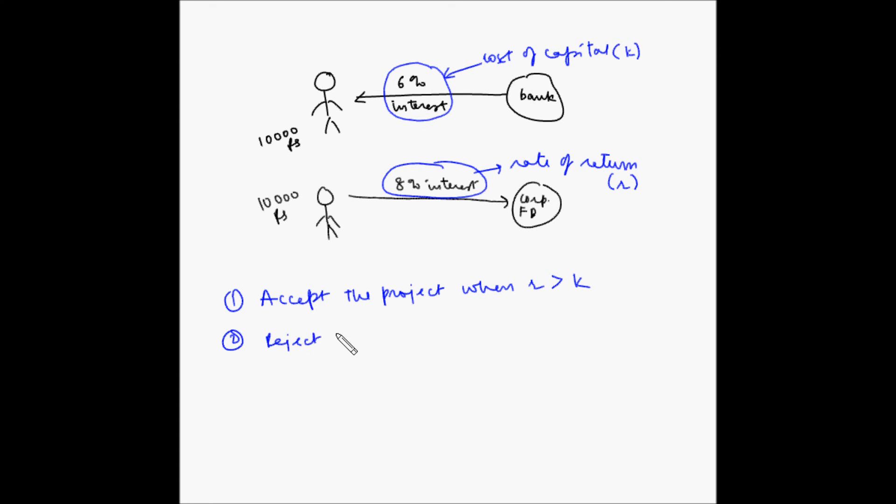Second, reject the project when R is less than K, or the rate of return is less than the cost of capital.